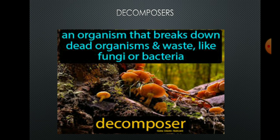When all types of consumers die, they are decomposed by decomposers — organisms that break down dead organisms and waste, like fungi or bacteria. Decomposers decompose dead plants and animals, and their nutrients are passed on into the soil. From the soil, producers can again utilize those nutrients. These are the different trophic levels in an ecosystem.